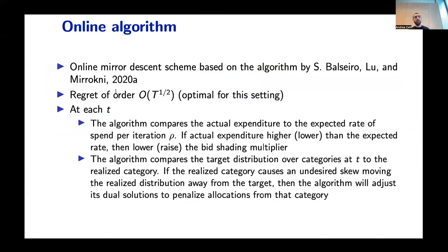The online algorithm that we use is based on the online mirror descent scheme that was first proposed in this paper by Balsero and others. We show that even in our setting with our parity regularizer, we can attain square root T regret, which is optimal. The idea is that at each time t, the algorithm compares the actual expenditures to the expected rate of expenditure per iteration. If the actual expenditure is higher than the expected one, then the algorithm will lower the bid shading multiplier and vice versa.